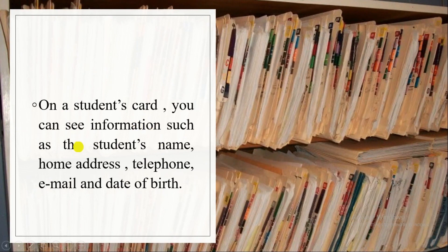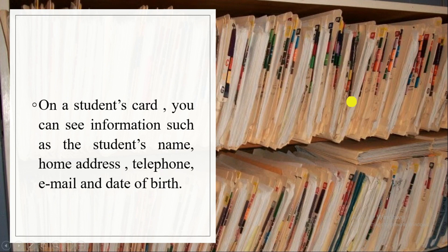On a student card, you can see information such as the student's name, home address, telephone, email, date of birth, and many others. Here there is a file or card for each and every student, and in that card you can see all the information about a particular student. For example, Ali Mohammed of some grade like 5B — all his details will be stored there: his marks, how well he is doing in sports, arts, everything. This is called a student card or file. Previously, before computers were introduced, we would use these kinds of cards or files.